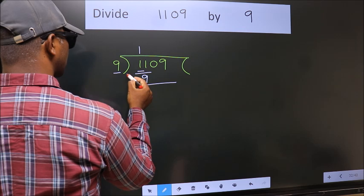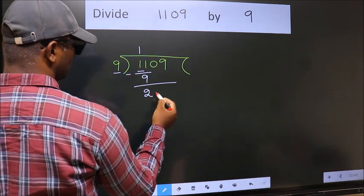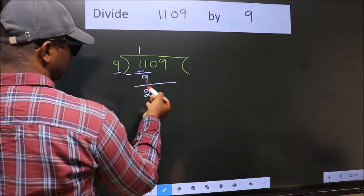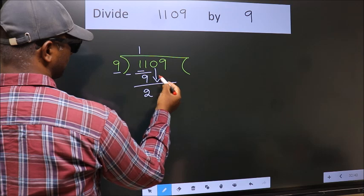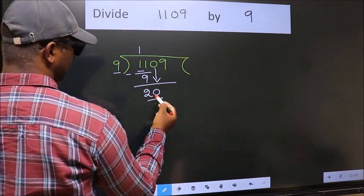Now we should subtract. We get 2. After this, bring down the beside number, so 0 down, giving us 20.